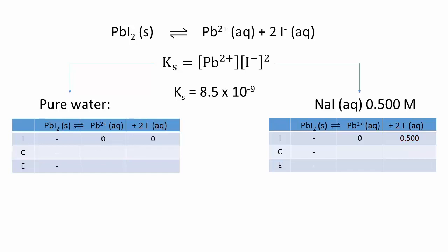The change line in the ice table is always identical in both. Be sure to take into account that the salt yields two iodide ions. Finally, the equilibrium line is the sum of the first two.